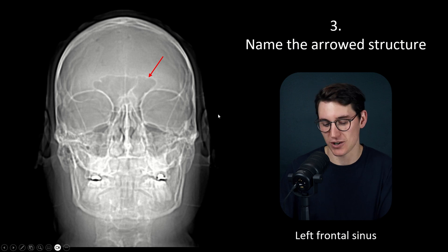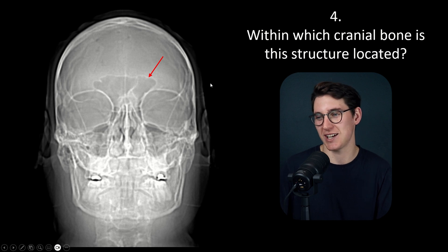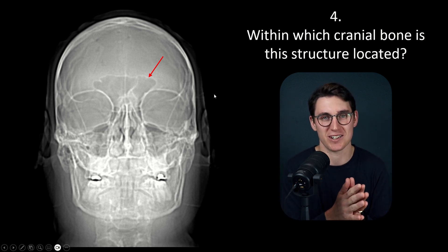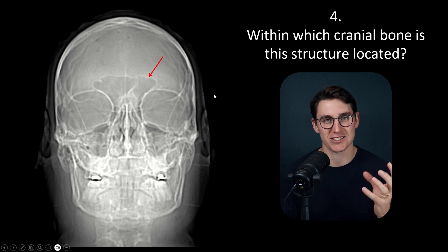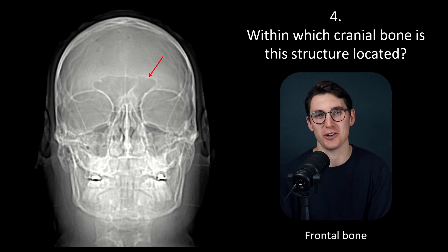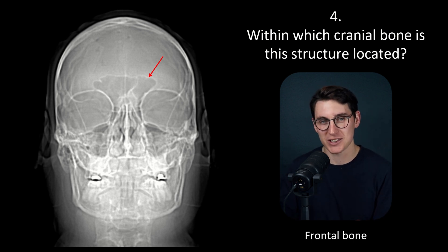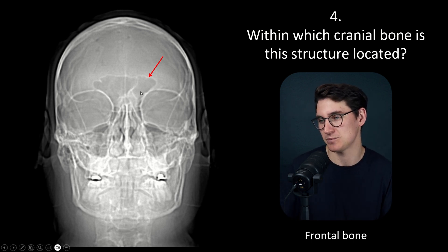So that's the left frontal sinus. In question 4, we're asked within which cranial bone this structure is located. When it comes to paranasal sinuses, this is an easy question — they're named after the bone they lie within. The frontal sinus lies within the frontal bone, the maxillary sinus within the maxilla, the ethmoid sinus in the ethmoid bone, and the sphenoid sinus in the sphenoid bone.